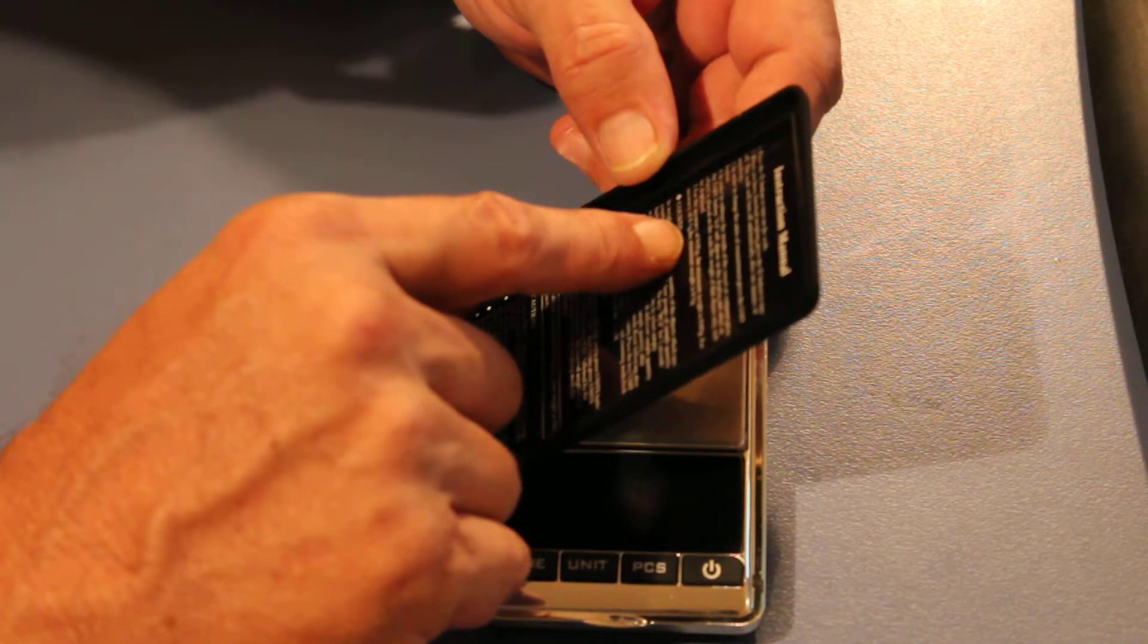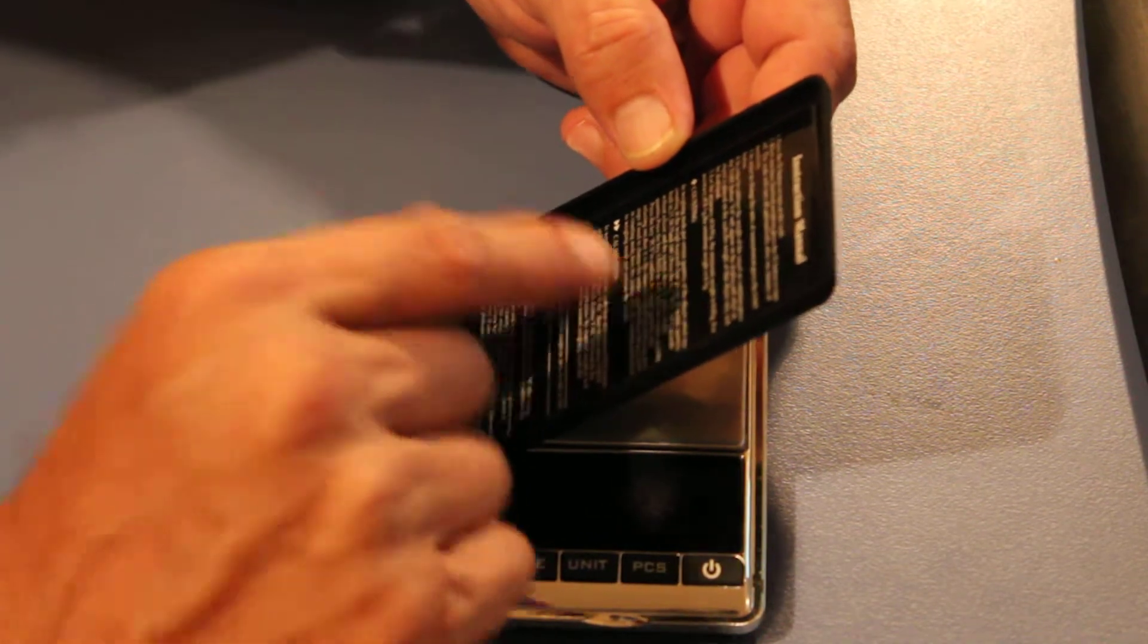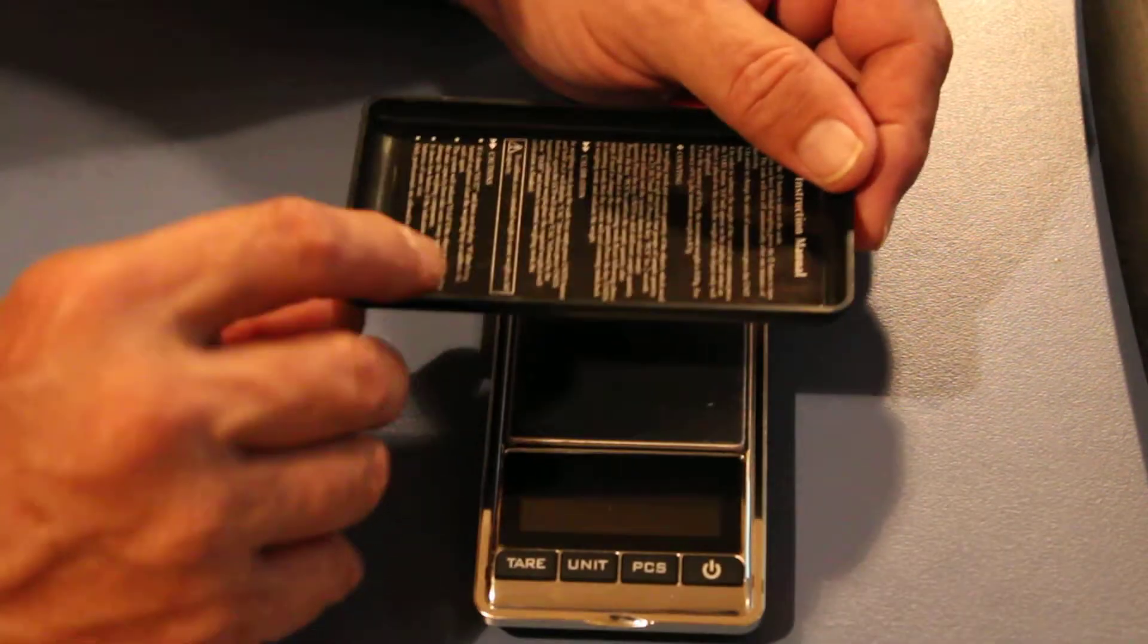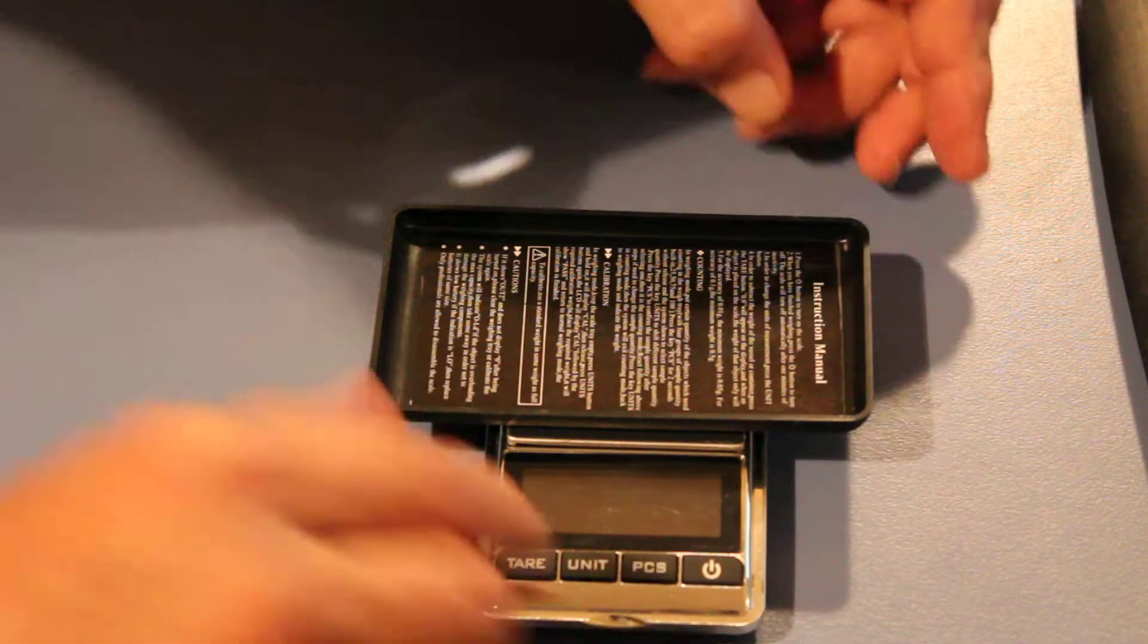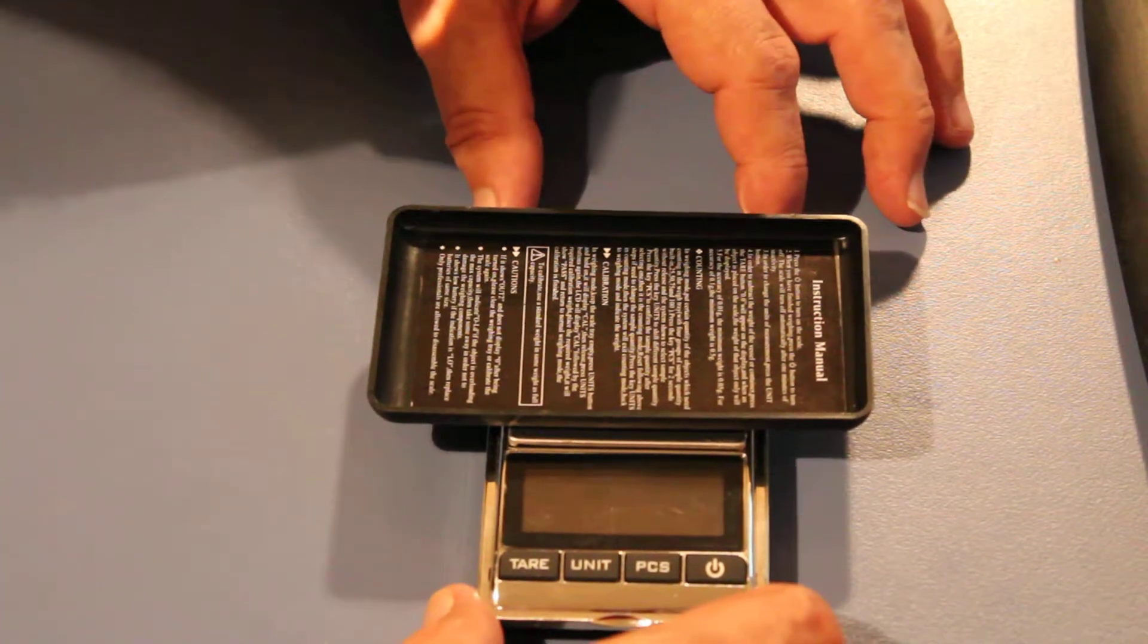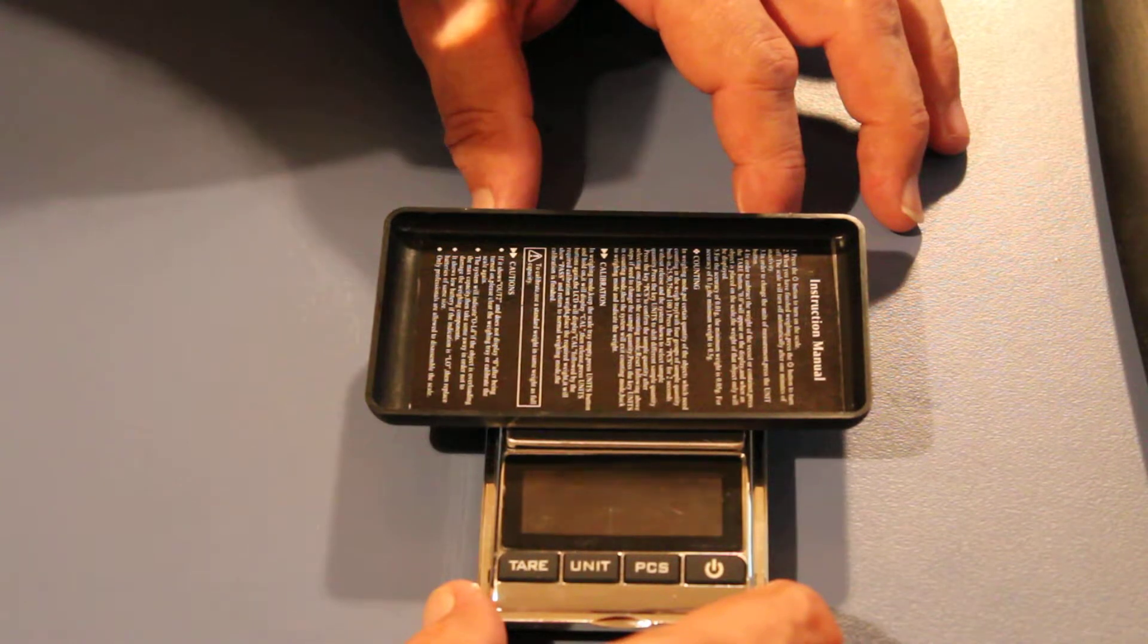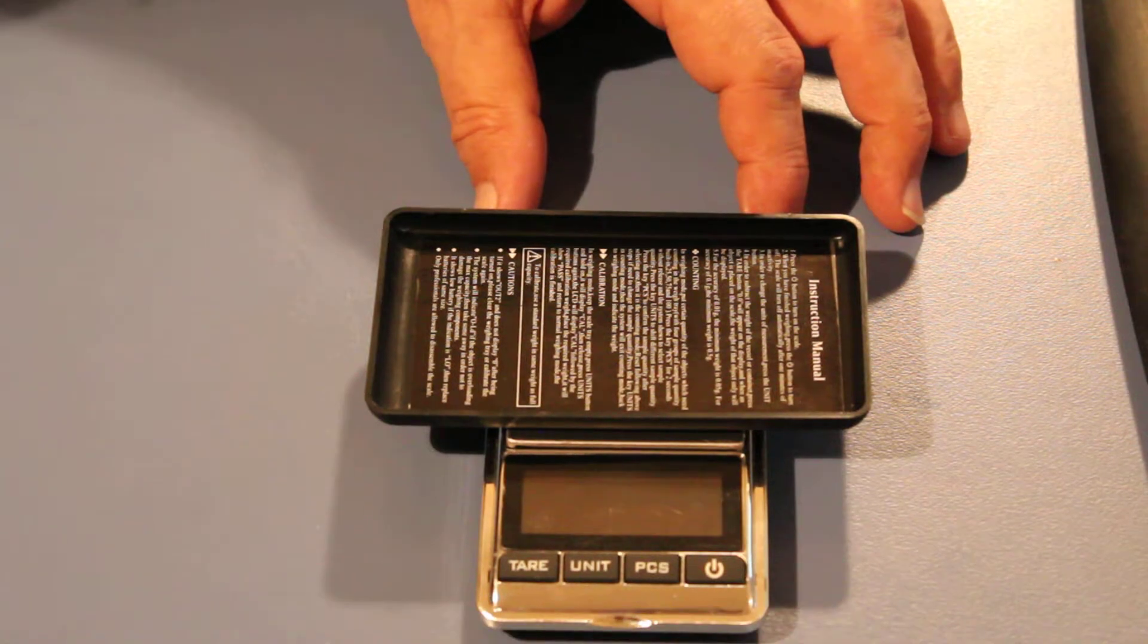...is for the accuracy of 0.01 of a gram, the minimum weight is 0.05 grams. For accuracy of 0.1 gram, the minimum weight is 0.5 grams. So you just got to have that bit of weight on there to really let it know it's working, although I've played around with them and they don't seem too bad under that, which I'll show you in a second.